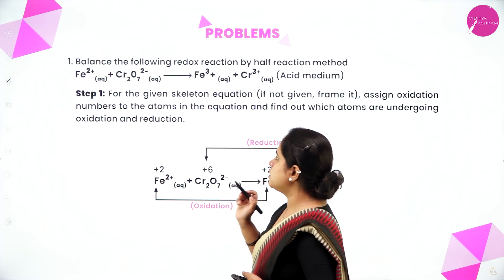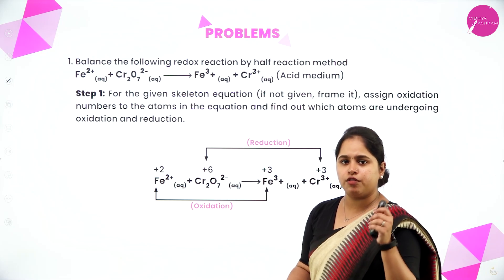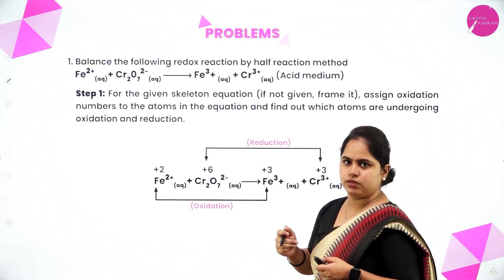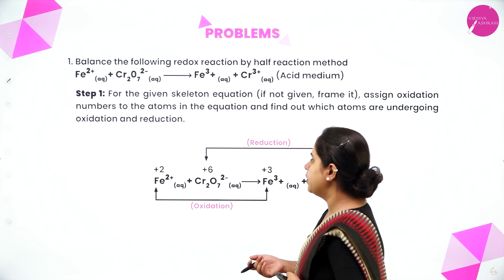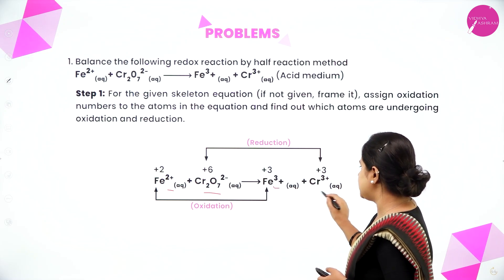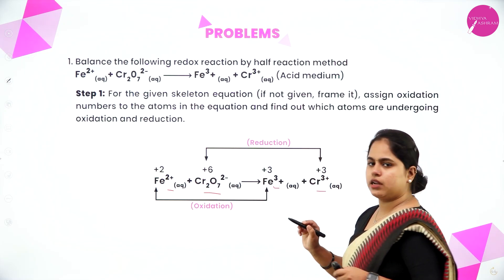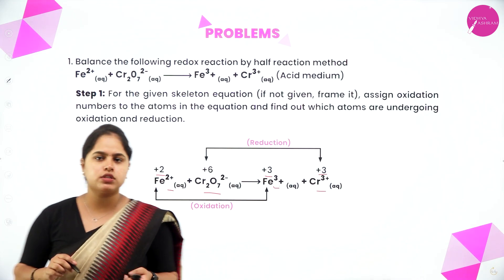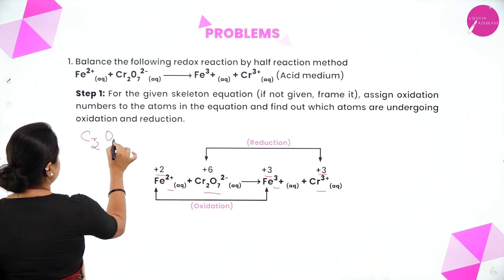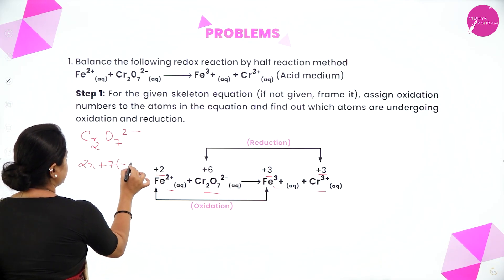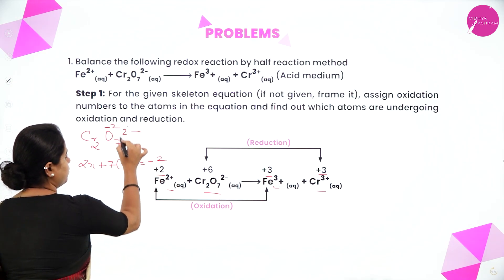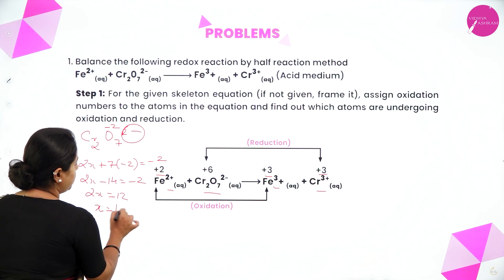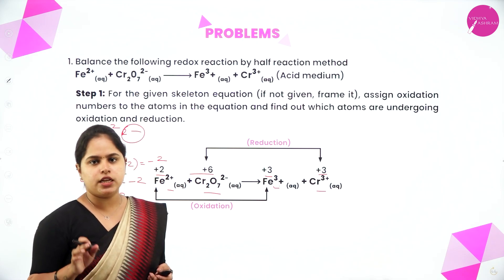Now let's take a problem. Balance the following redox reaction by the half reaction method. The reaction is Fe²⁺ + Cr₂O₇²⁻ gives Fe³⁺ and Cr³⁺. The skeletal equation is already given. Assigning oxidation numbers: Fe²⁺ is +2, Fe³⁺ is +3, and Cr³⁺ is +3. For Cr₂O₇²⁻, solving 2x + 7(−2) = −2 gives 2x − 14 = −2, so x = +6. That is the oxidation number of chromium here, so assigning oxidation numbers is done.